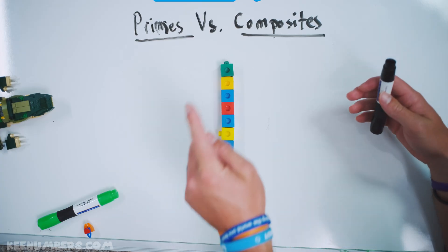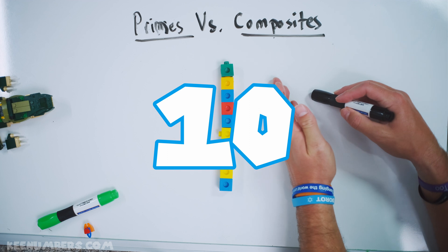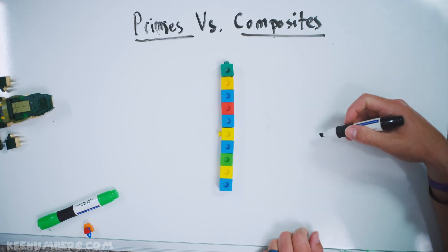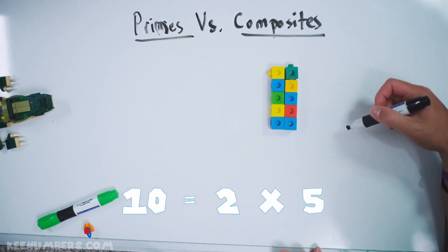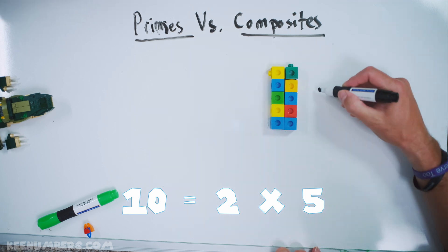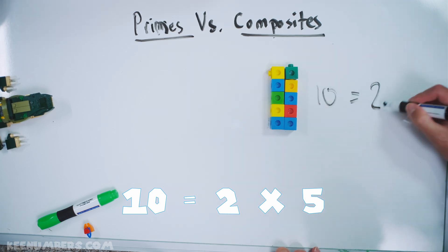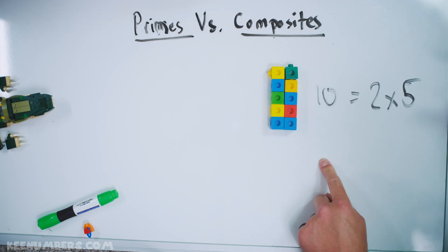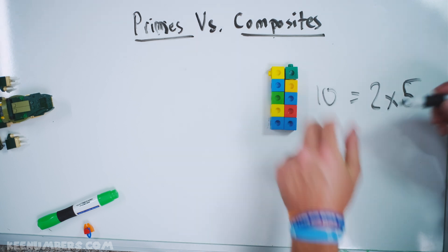What about 10? Is 10 a prime or a composite number? Can you break it down into smaller numbers? Yes, you can — and you can see it visually. Look at that, it's a 2x5. 10 is a composite number.